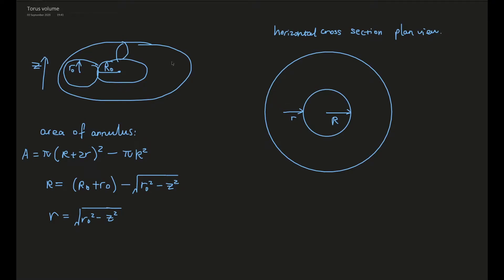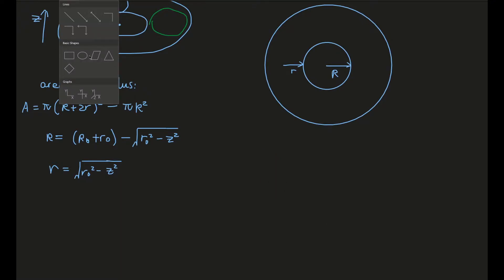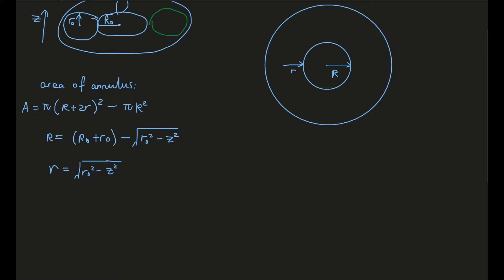To find the volume of a torus, we can use integration by the washer method. Consider the torus as the volume of revolution of a circle about the z-axis. We can imagine slicing the torus up into many annuli and add up the area of every single one of them.